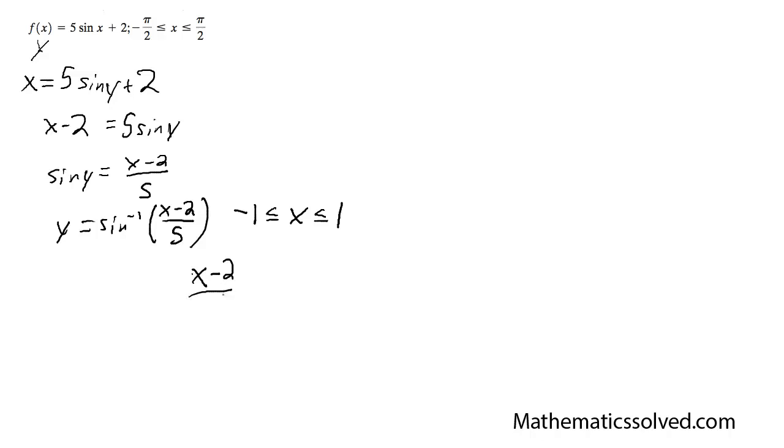So times 5, x minus 2 is equal to negative 5, plus 2, so in this case I get x is equal to negative 3.